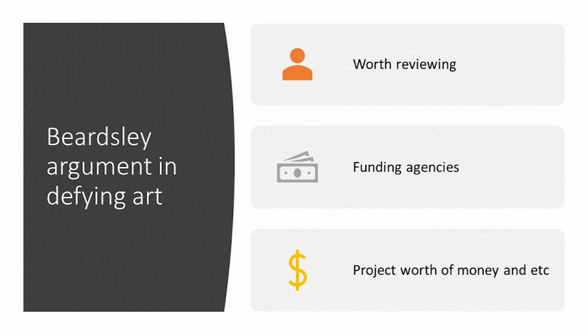Now let's talk about Beardsley's argument in defining art. He tries to defend the definition of art and is always in argument because everyone has their own perspective, opinion, and dogma. Beardsley comes out with three things he argues about: reviewing, funding agencies, and projects — essentially the world of money. He begins by clarifying why it is important to define art. He argued that art can have too many uses, especially when trying to critique it and deciding what reviewing or funding agencies should support.